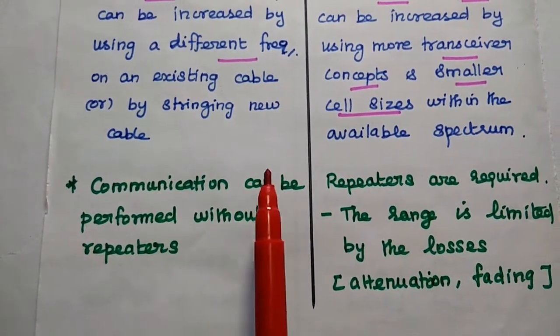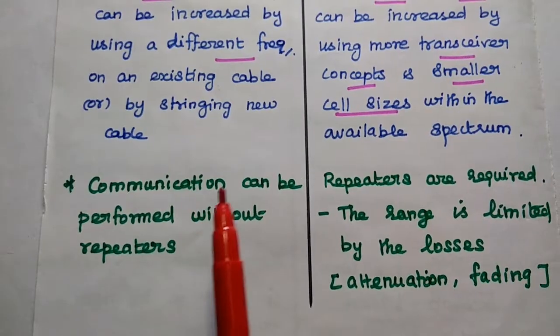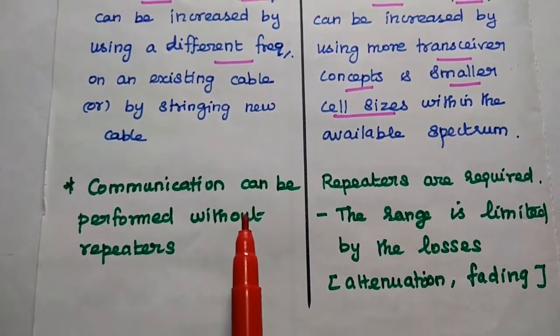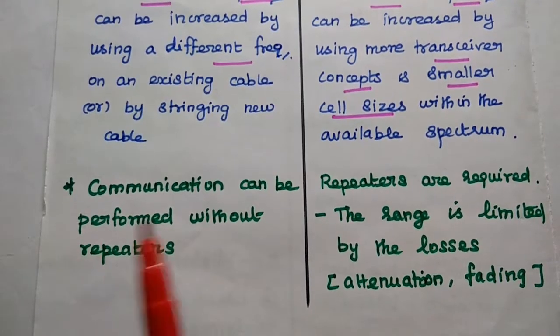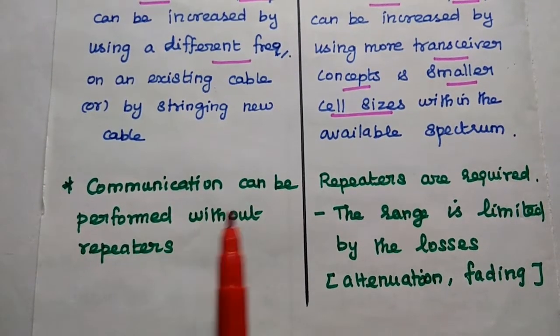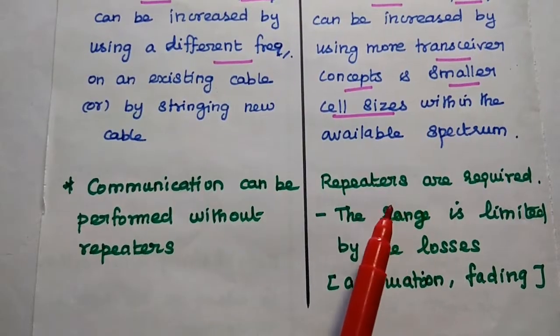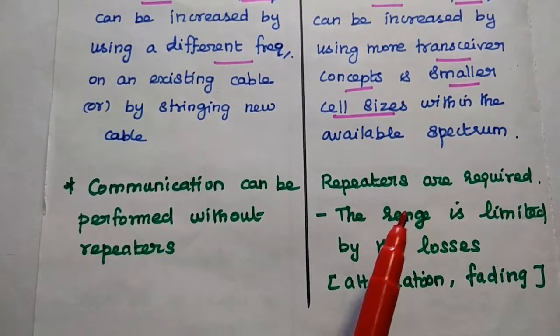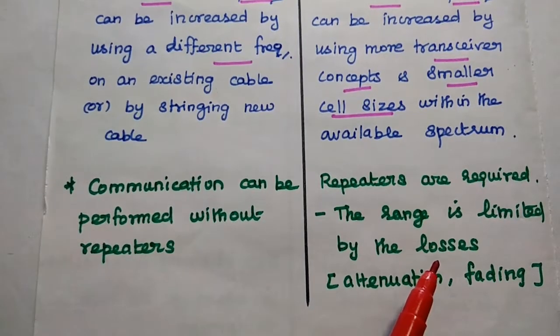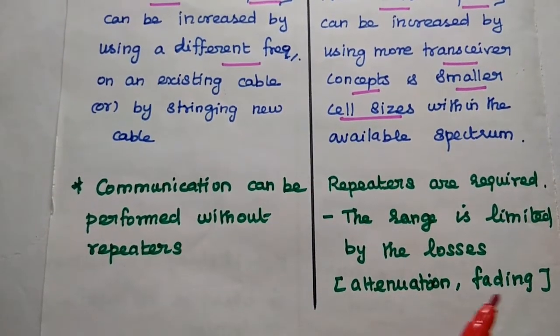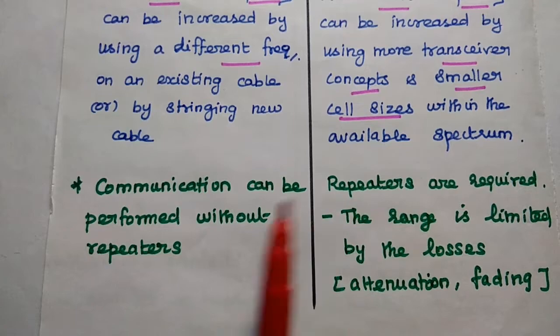Finally, in wired communication, the communication can be performed without any repeaters because it is connected from the transmitter to the receiver dedicatedly. But in wireless medium, repeaters are required because the range is limited by the losses in the air medium like attenuation, fading, etc. Do you all understand this concept?